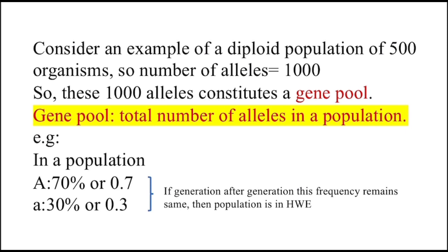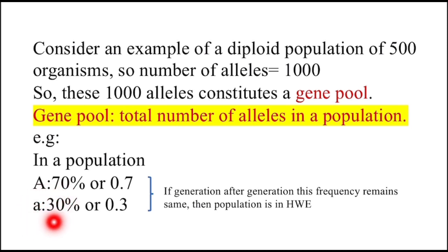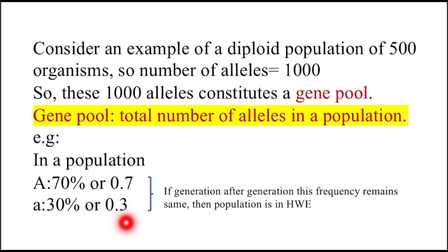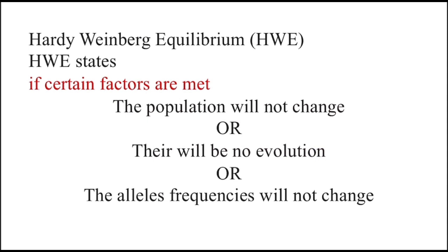Gene pool is the total number of alleles in a population. For example, in a population there are two alleles: capital A and small a. Capital A may have a frequency of 70% and small a a frequency of 30%, or we can say the frequency of allele A is 0.7 and that of small a is 0.3. If generation after generation this frequency remains the same, then the population is in HWE. HWE states that allele frequencies will not change if certain factors are met.